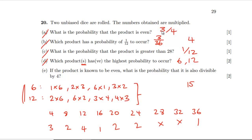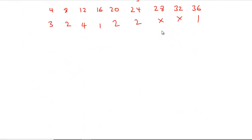That gives 15 different ways out of the 27 even outcomes — so the probability is 15 over 27, which is five over nine. It didn't feel very satisfactory but those are the correct answers. If you have a better approach, let me know in the comments.